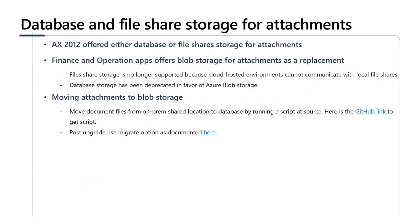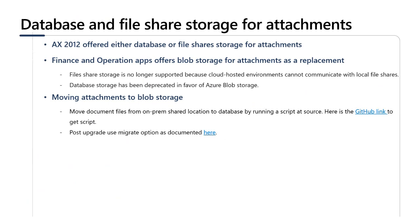The second consideration is attachments. AX 2012 offered two options: storing attachments in the database or on file shares. Finance and Operations offers Azure Blob Storage as a replacement. File share is no longer supported because Finance and Operations lives in the cloud and cannot communicate with local file shares. Database storage has been deprecated in favor of Azure Blob Storage for cost and performance reasons. If you used file shares, you must first move documents from the file share into your AX 2012 database using the provided GitHub script, then use a post-upgrade migration option to move the files from the database to Blob Storage.